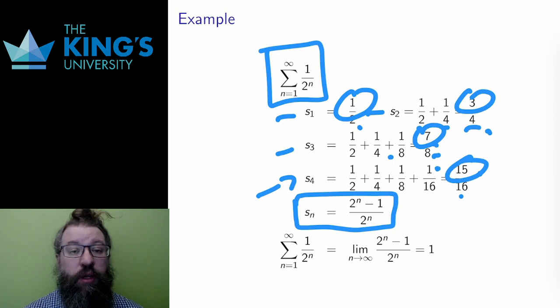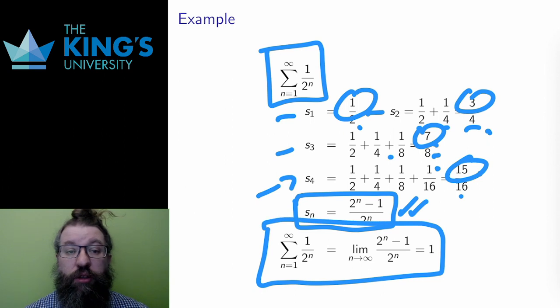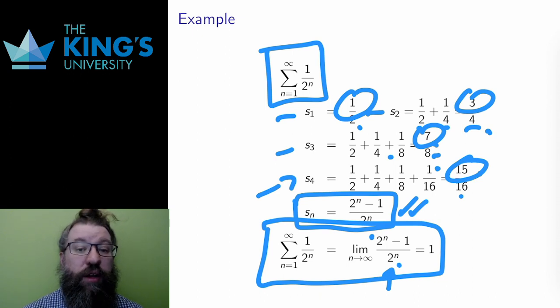Therefore, the nth partial sum is Sn equals 2 to the n minus 1 over 2 to the n. Well, then I can take the limit of this sum. Asymptotically, the numerator and denominator have the same asymptotic order, 2 to the n, and the leading coefficients of the 2 to the n's are both just 1. Therefore, this limit is just 1, and I conclude that the sum is just 1.